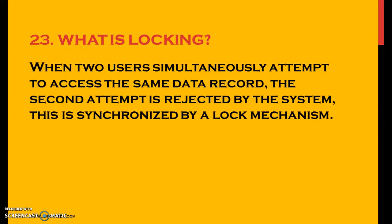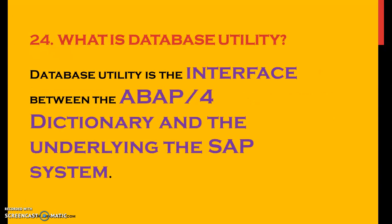What is locking? When two users simultaneously attempt to access the same data record, the second attempt is rejected by the system. This is synchronized by a lock mechanism. Basically when you're updating data into a particular table, that is when the locking applies. So what is database utility? Database utility is the interface between the ABAP dictionary and the underlying SAP system.